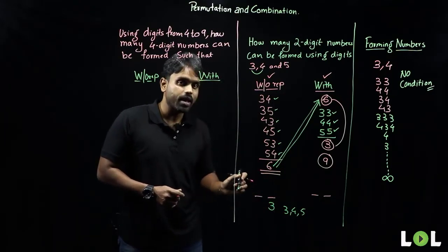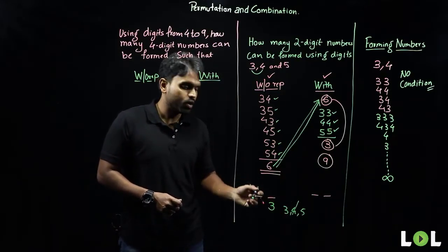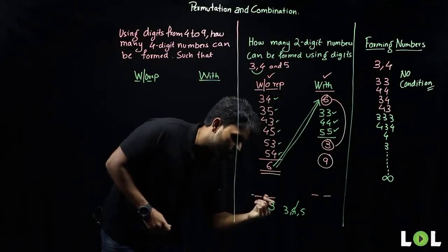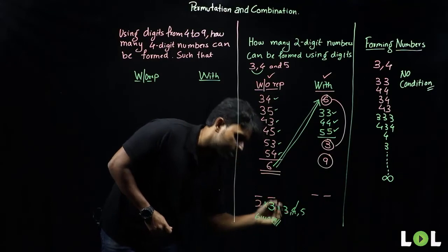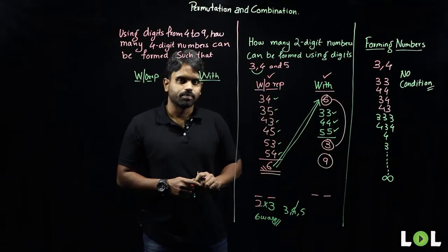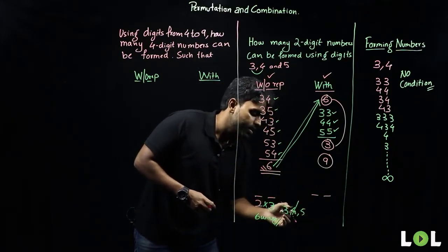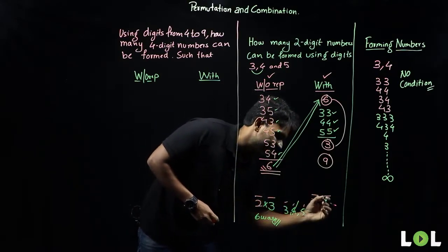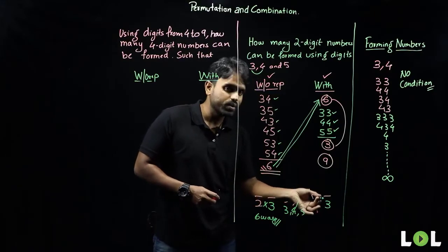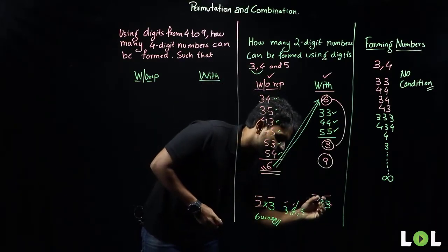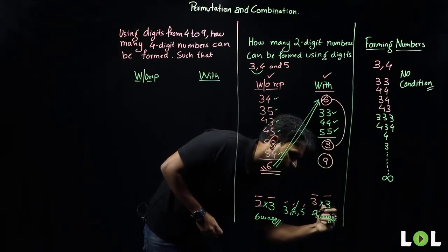The units place can be filled in 3 ways (using 3, 4, or 5). Without repetition: if one digit is used, only 2 remain for the tens place — so 3 × 2 = 6 ways. With repetition: the used digit can be reused, so the tens place also has 3 choices — giving 3 × 3 = 9 ways. Both match our earlier results.